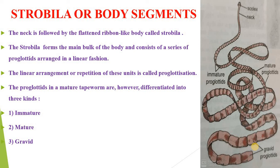The detachment of proglottids is termed apolysis. These detached proglottids are passed out of the host during defecation along with fecal matter. The phenomenon of apolysis is significant because it helps in transferring the developing embryos to the outside from the body of the host.